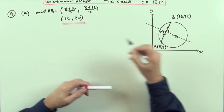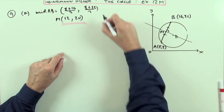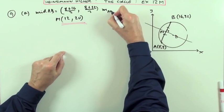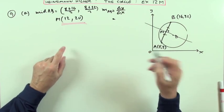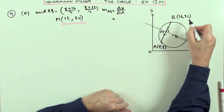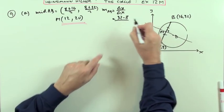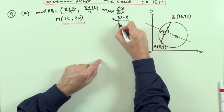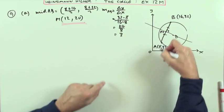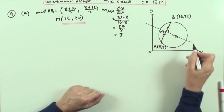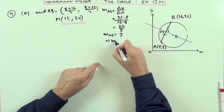Next thing: what's the gradient of the line AB? The difference in the y coordinates over the difference in the x's. Y coordinates first: 32 - 8. X coordinates: 16 - 8. So that's going to be 24/8, which is 3. So that's got gradient 3, which means the line that you actually want, the perpendicular line, will be negative one-third.